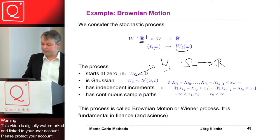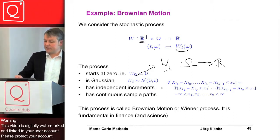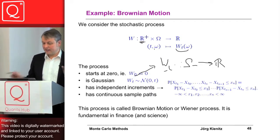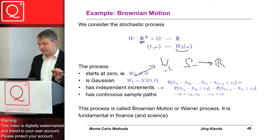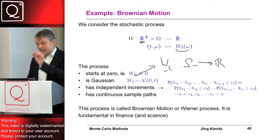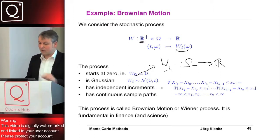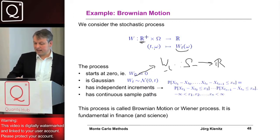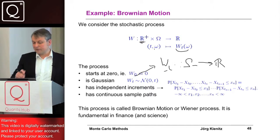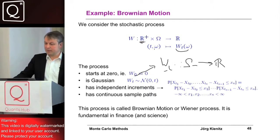The independent increments property: whenever we have a discretization and take successive steps, we take the random variable at T1 minus XT0, XT2 minus XT1, XT3 minus XT2, and so on. They are independent, so we can calculate this complex probability as a multiplication of several different probabilities.